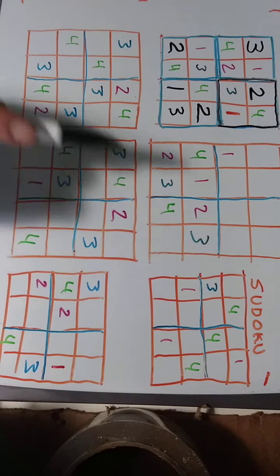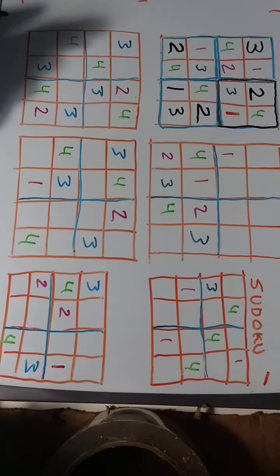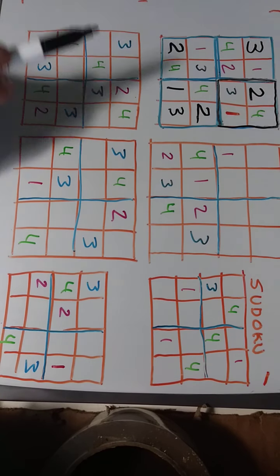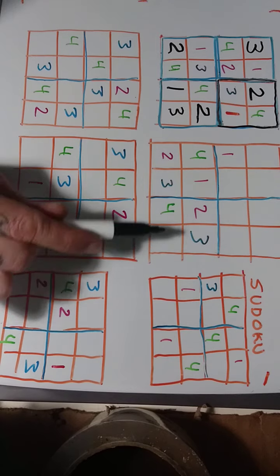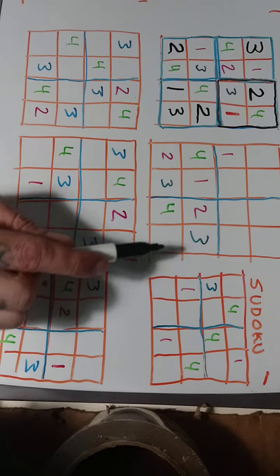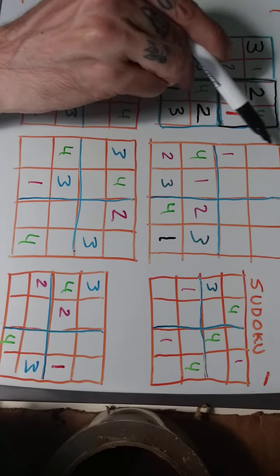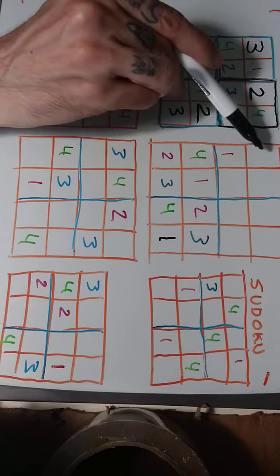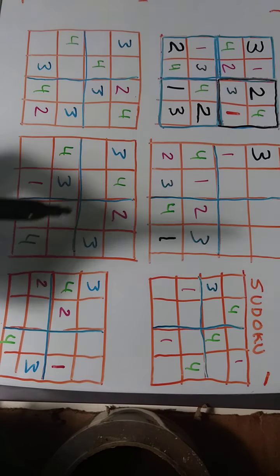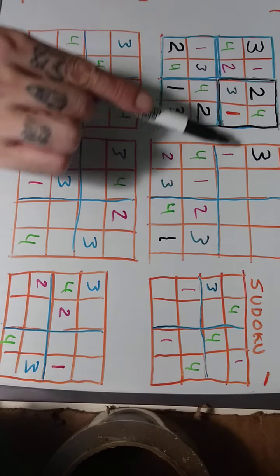If you want to pause the video and solve these next puzzles, go ahead and do that now, and then I'll show you how I solve them. Welcome back. I'm going to start with this bottom row — or the bottom right square — I know I'm missing a one, and in this column I know I'm missing a three.